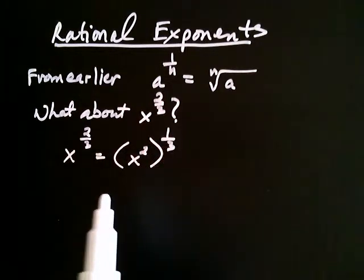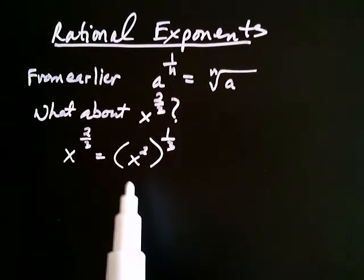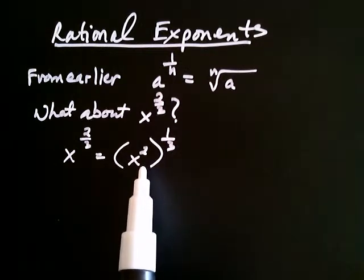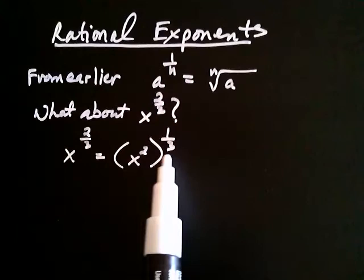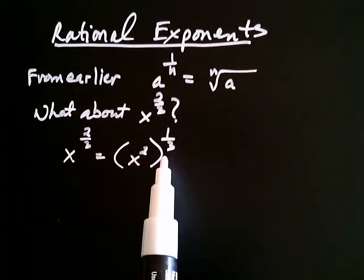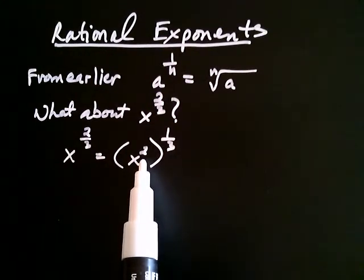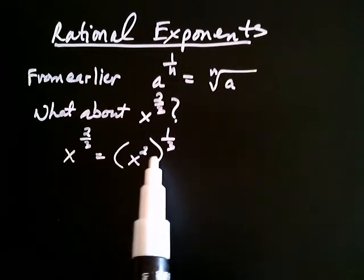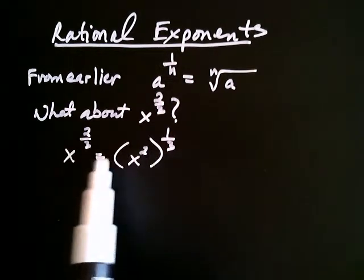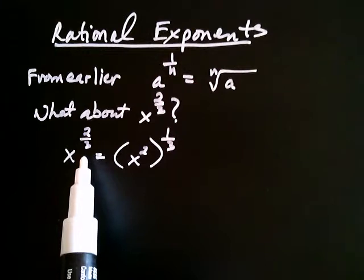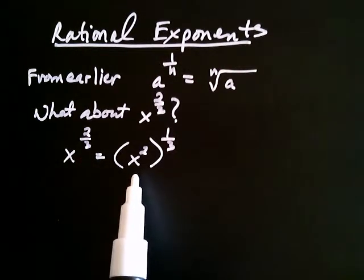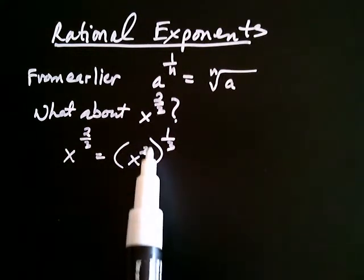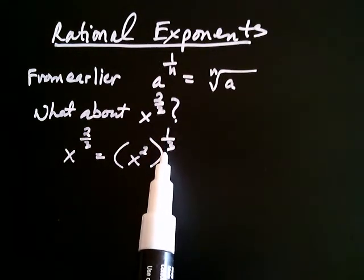How do I know that? We said earlier that when you have an exponential expression raised to a power, you can multiply the exponents. And isn't it true that 2 — which is the same as 2 over 1 — times 1 over 3 is the same thing as 2 thirds? It is. Think about what this is saying: take all of x squared and raise it to the 1 third.